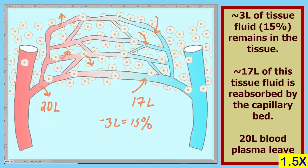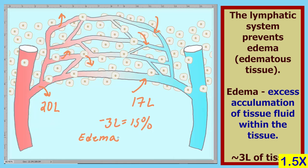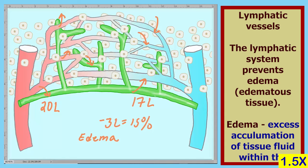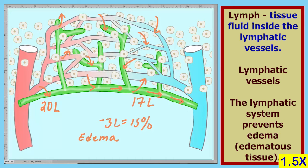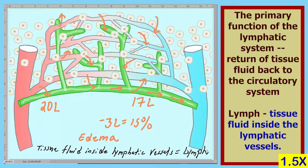If this tissue fluid were to remain in the tissues, the tissues would become swollen — a condition known as edema, and the tissue is said to be edematous. This condition is prevented by the lymphatic system. The tissue fluid that is not returned to the circulatory system enters the lymphatic vessels, shown here in green, and eventually makes its way back to the circulatory system. Once this tissue fluid enters the lymphatic vessels, it is now called lymph. So this is the primary function of the lymphatic system: the return of tissue fluid back to the circulatory system.